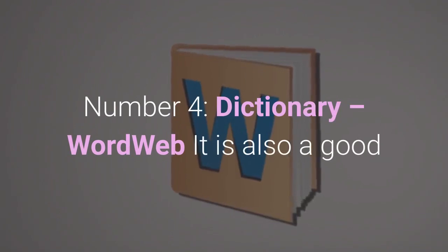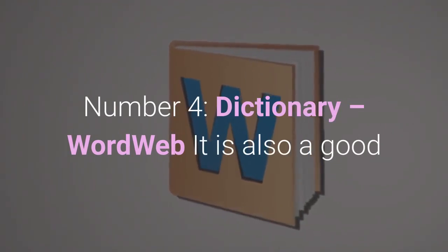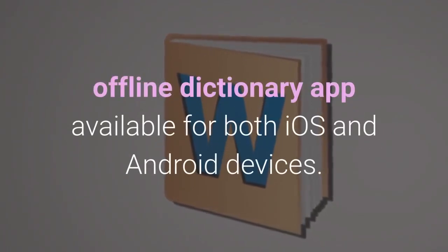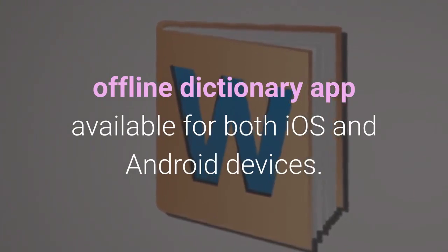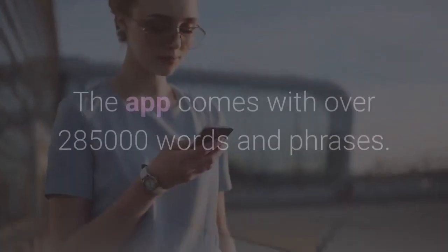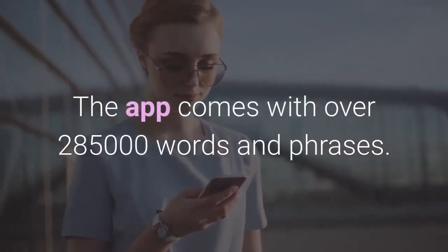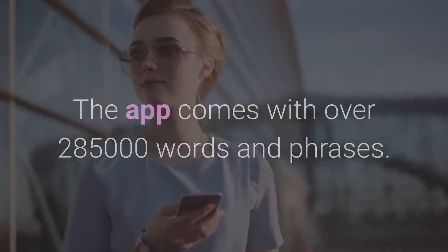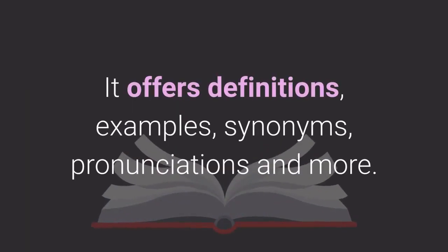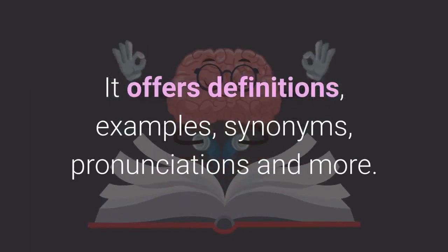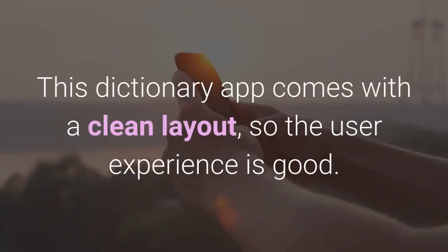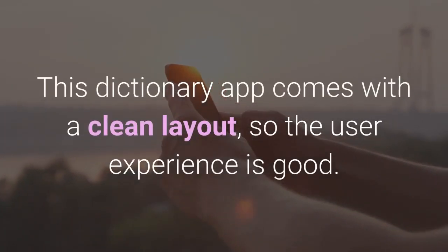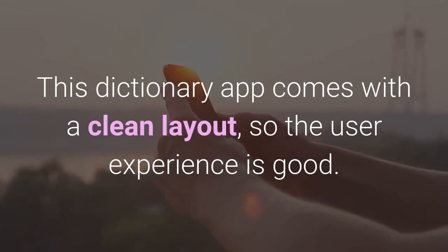Number 4: Dictionary WordWeb. It is also a good offline dictionary app available for both iOS and Android devices. The app comes with over 285 thousand words and phrases. It offers definitions, examples, synonyms, pronunciations, and more. This dictionary app comes with a clean layout, so the user experience is good.